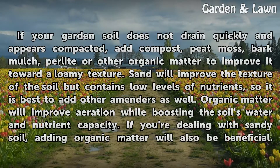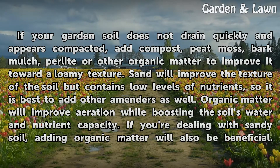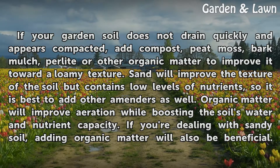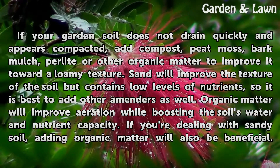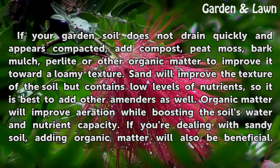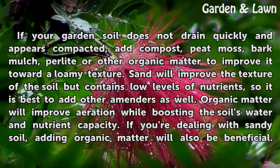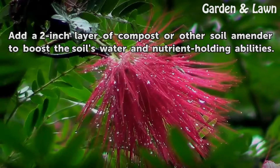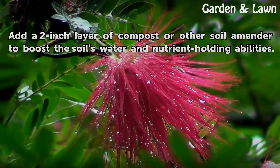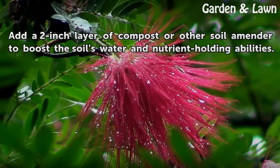If your garden soil does not drain quickly and appears compacted, add compost, peat moss, bark mulch, perlite or other organic matter to improve it toward a loam texture. Sand will improve the texture of the soil but contains low levels of nutrients, so it is best to add other amenders as well. Organic matter will improve aeration while boosting the soil's water and nutrient capacity. If you're dealing with sandy soil, adding organic matter will also be beneficial. Add a 2-inch layer of compost or other soil amender to boost the soil's water and nutrient holding abilities.